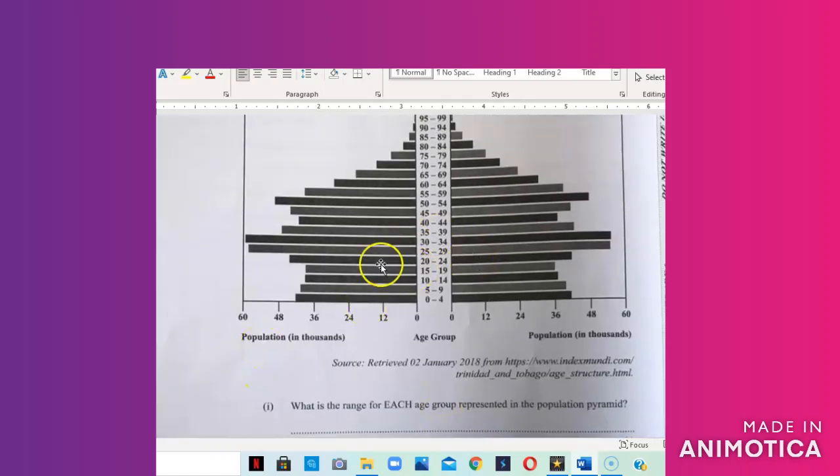Part one asks us what is the range for each age group represented in the population pyramid. Now the range is how much the graph is going up by. So we have zero to four, five to nine, so the range is four. For most population pyramids the range will also be four. So part one, the answer is four for the range.